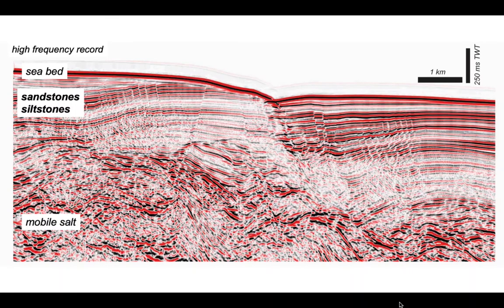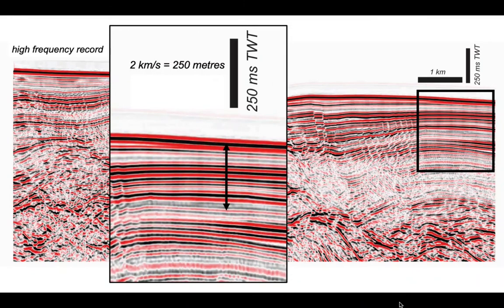What do we mean by high frequency? The section is displayed in two-way time, and the seismic velocity for these types of materials is likely to be on the order of two kilometers per second. Therefore, 250 milliseconds two-way time equals approximately 250 meters in real depth. By counting the number of black stripes in here, we can see there are something like 10 wavelets over that distance, so each wavelet is approximately 25 meters. That's pretty spectacular resolution for seismic reflection profiles, but bear in mind that 25 meters is about the height of a five-story office block — so compared to geological rock outcrops, this is still quite coarse.